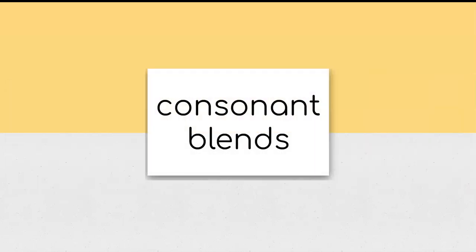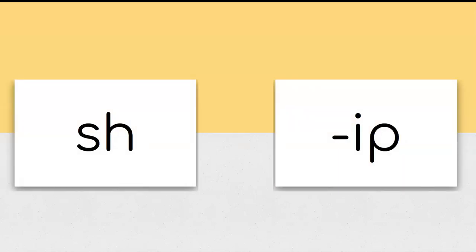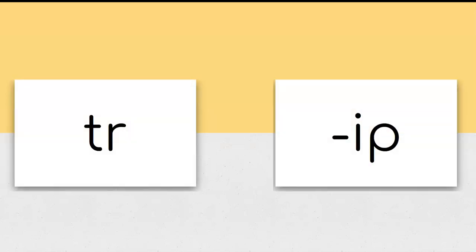Here are some consonant blends. Sh, ip, ship. Tr, ip, trip. Remember, if you know the pattern, you can read and write the word.